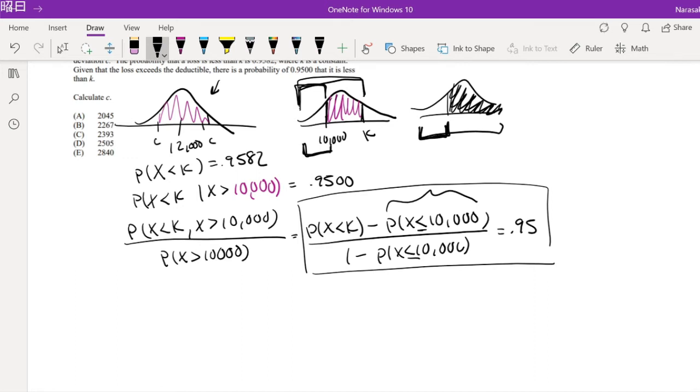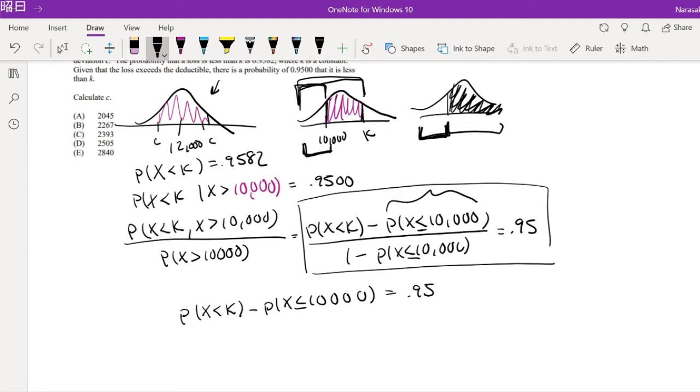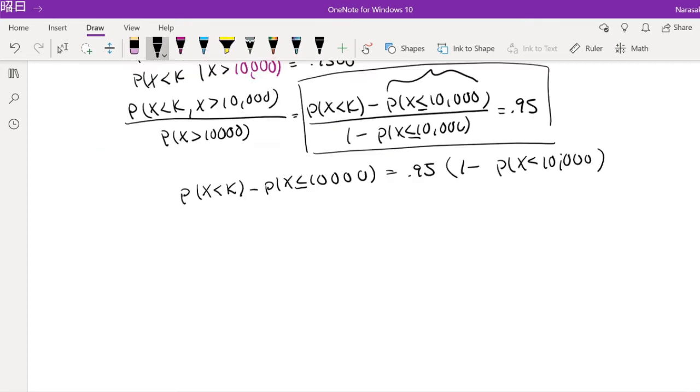Okay, so what we can do is we can actually try to solve for X is less than K. So this is equal to 0.95 times 1 minus the probability that X is less than $10,000.